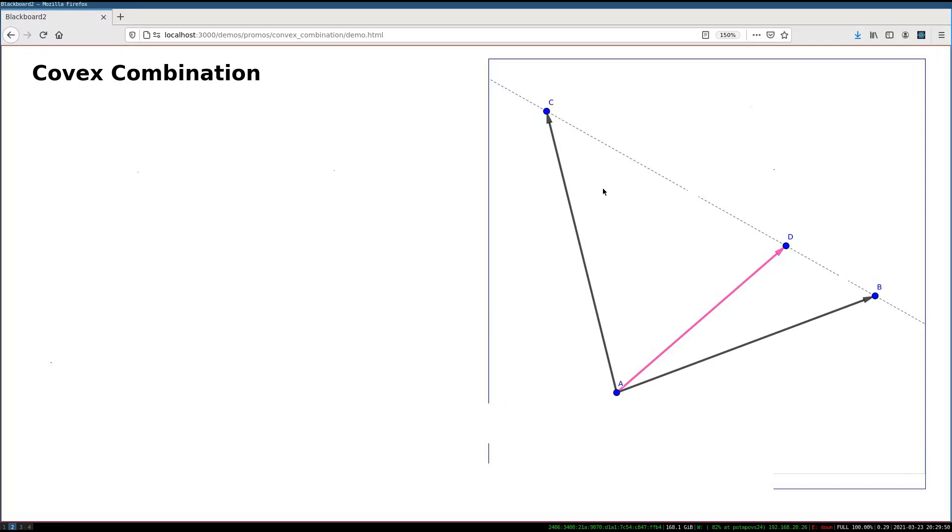A convex combination is a concept which you may find useful when you're facing the following task. If you have two vectors, AC and AB, and you need to find a third vector,